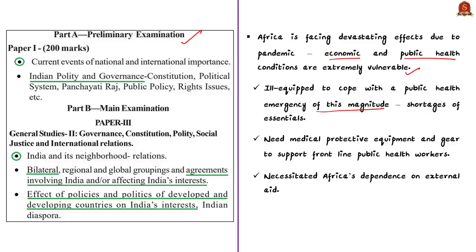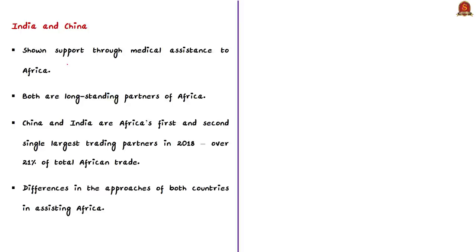This vulnerability is mainly due to shortage of masks, ventilators, and even basic things like soap and water. Africa is in need of medical protective equipment to support its frontline health workers, making it dependent on external aid, particularly from India and China. Both India and China are Asia's largest economies and long-standing partners of the African continent. In 2018, China and India were Africa's first and second single largest trading partners, accounting for almost 21% of total African trade. The authors highlight the different approaches of India and China in assisting Africa during this pandemic.